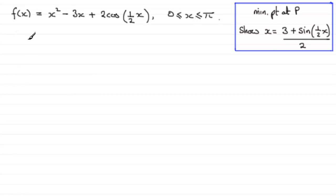So first of all then we need to differentiate this with respect to x. So we have f'(x), and if we differentiate x² with respect to x we get 2x. The differential of -3x with respect to x is -3.